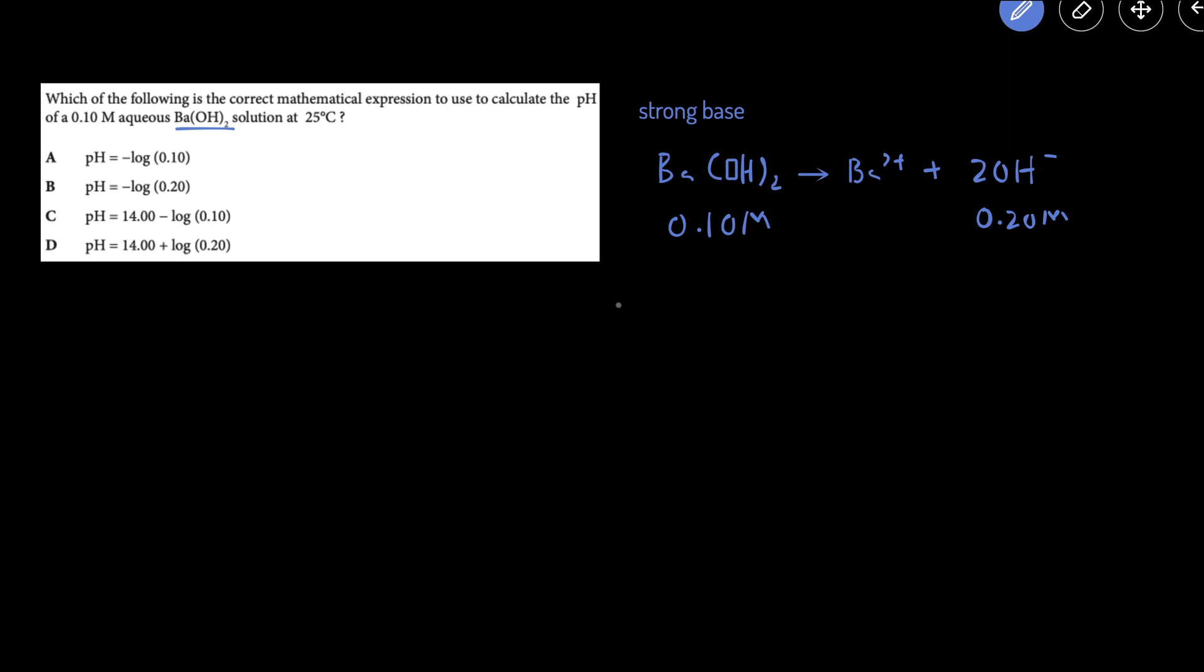Now that we have the concentration of hydroxide, we can figure out the pOH, and that's just a negative log of the concentration of OH which is 0.2.